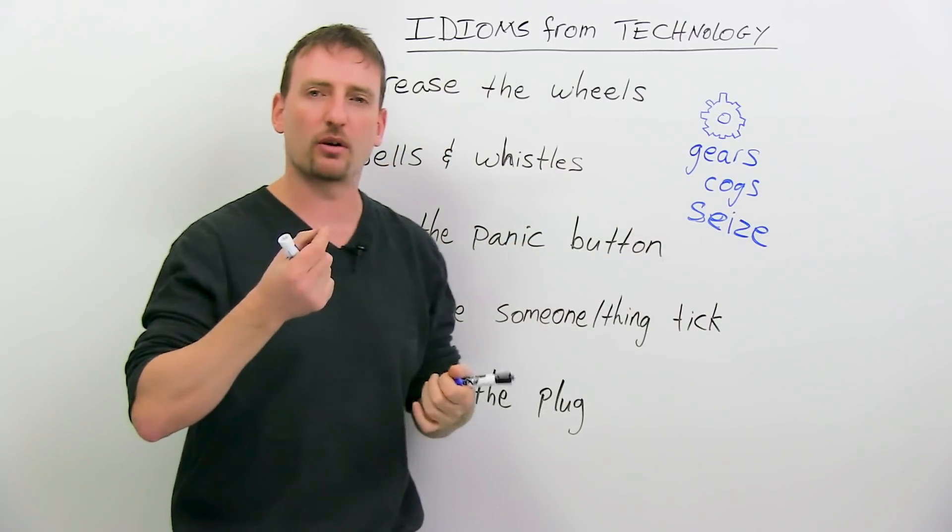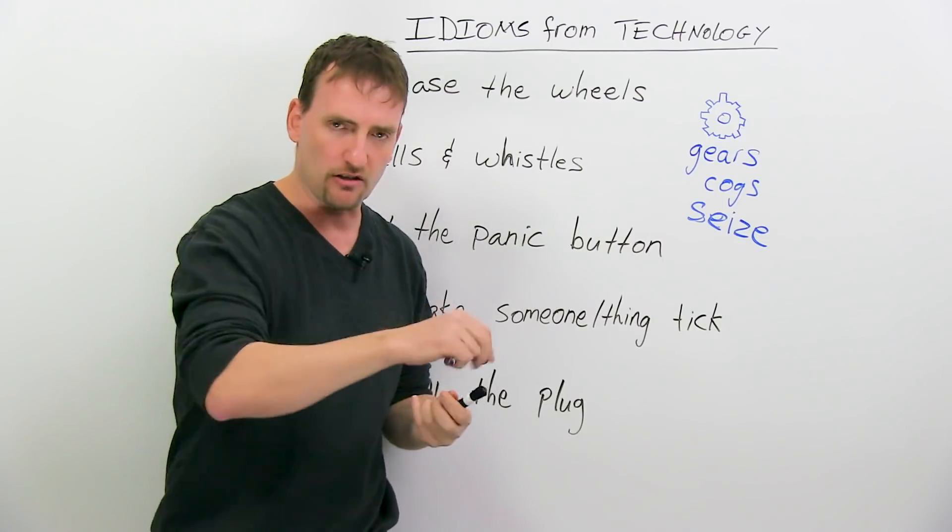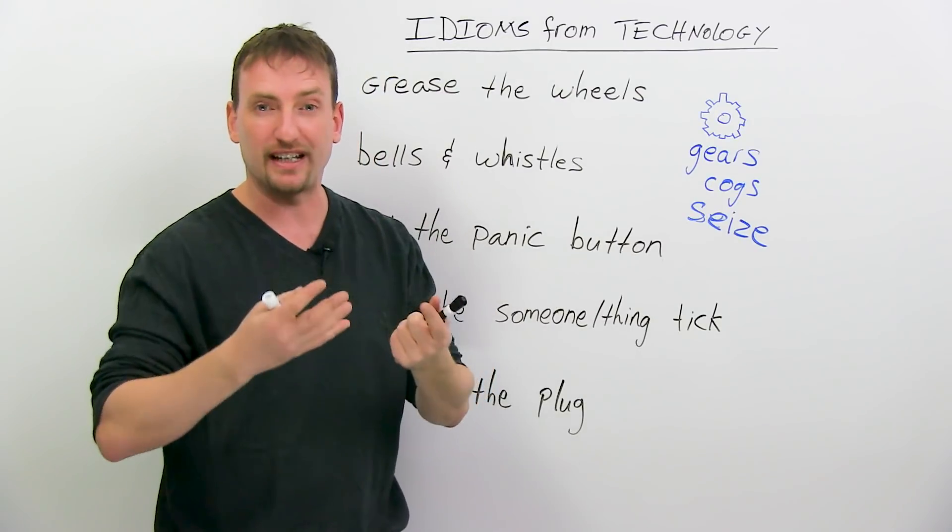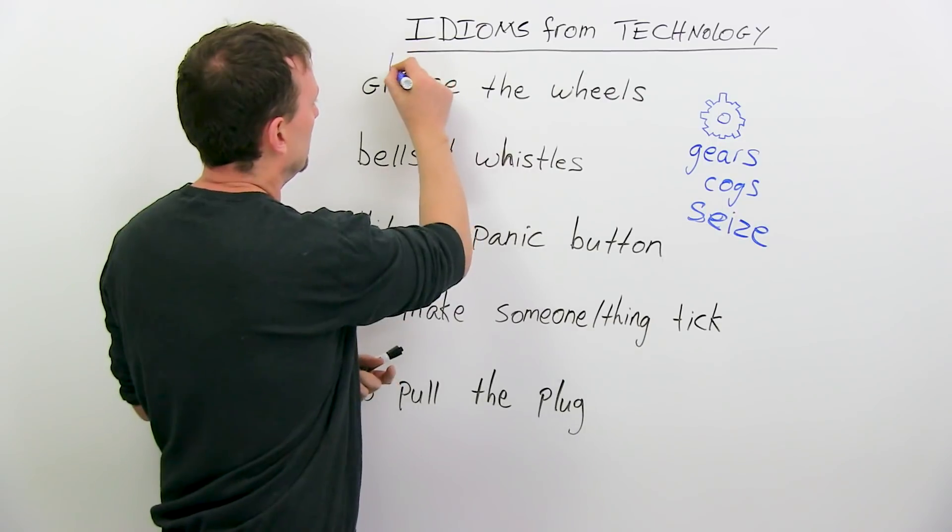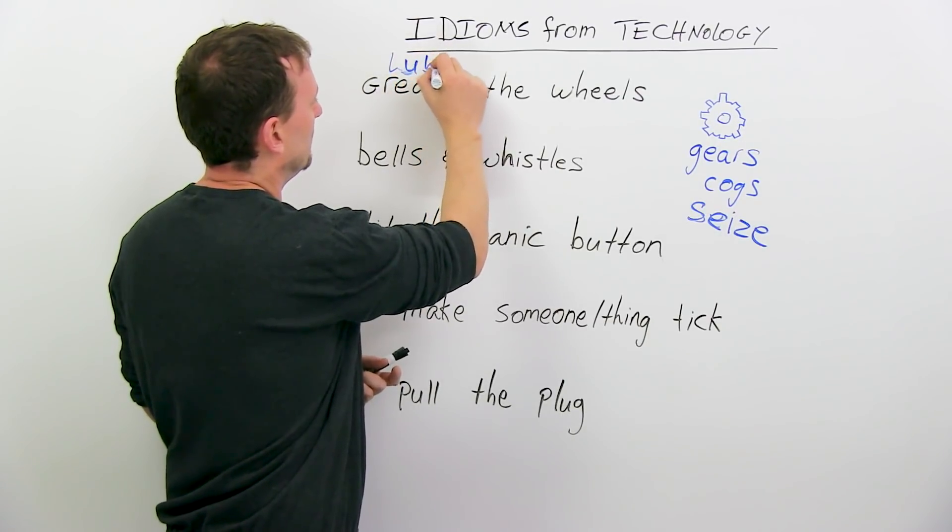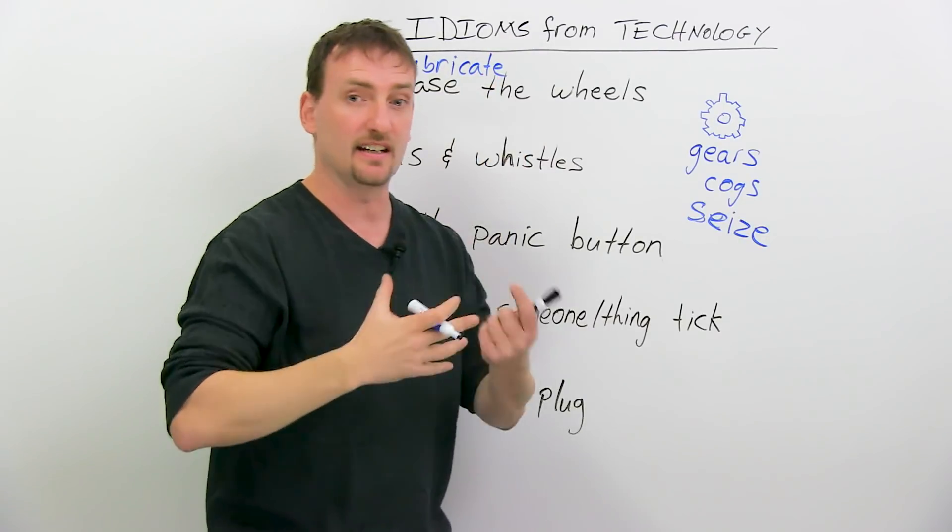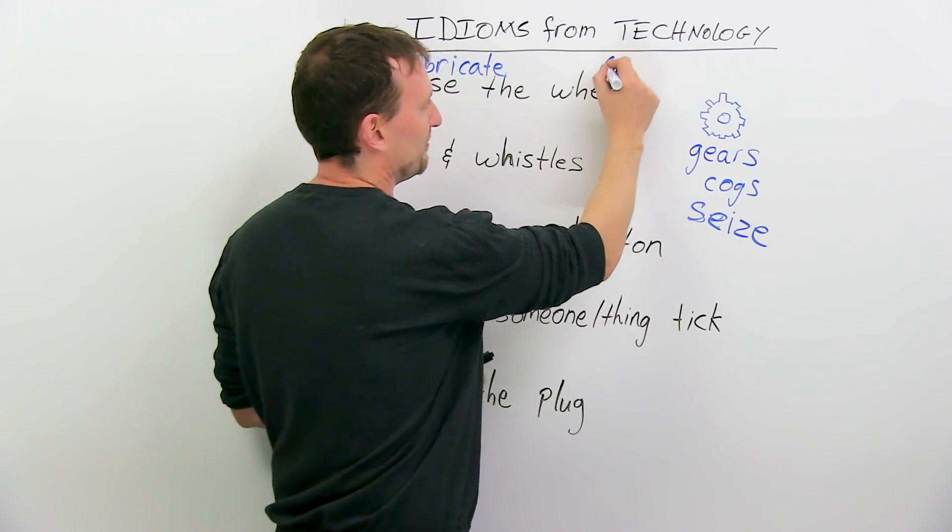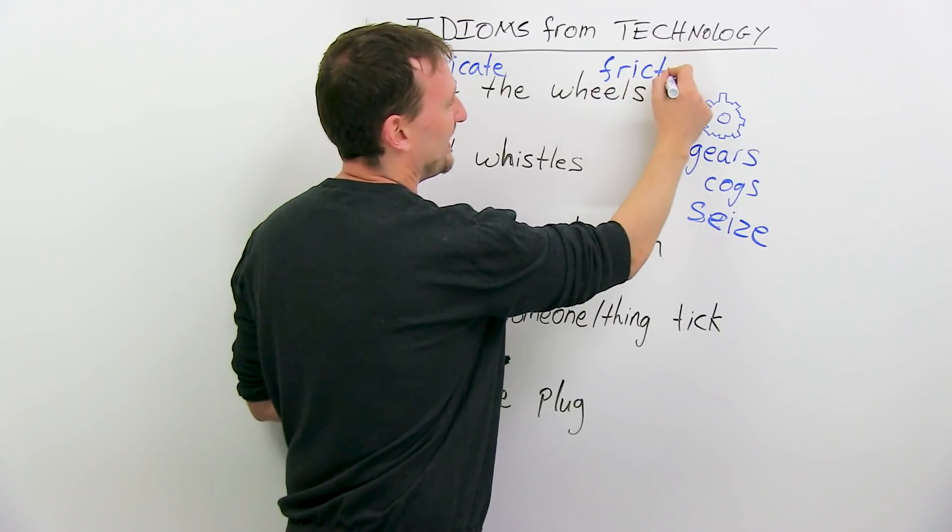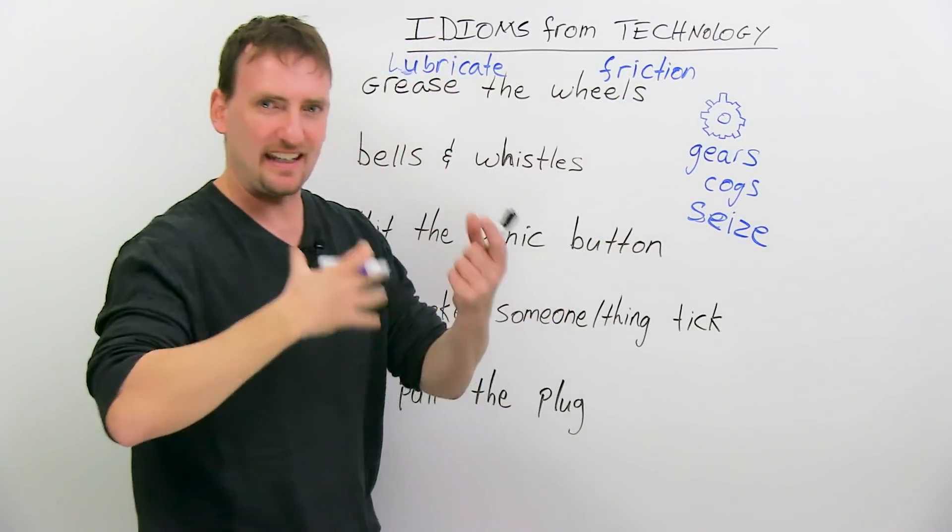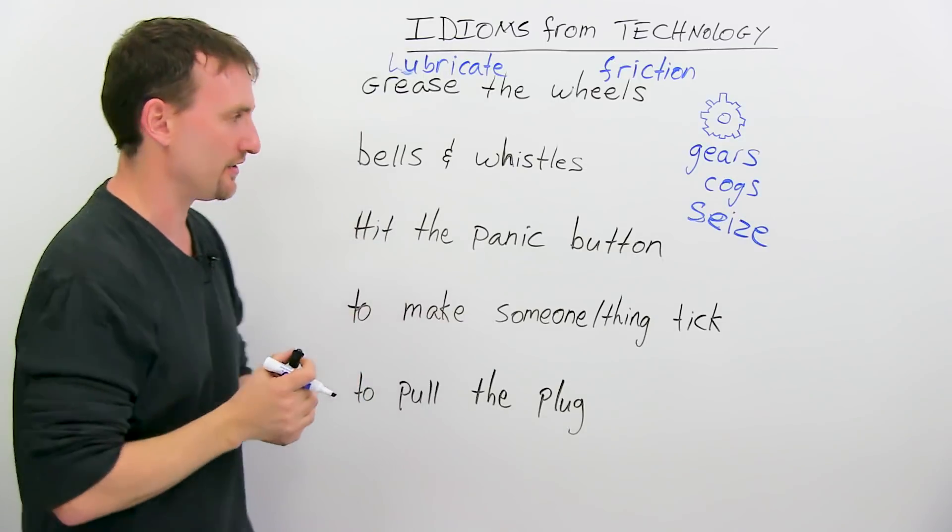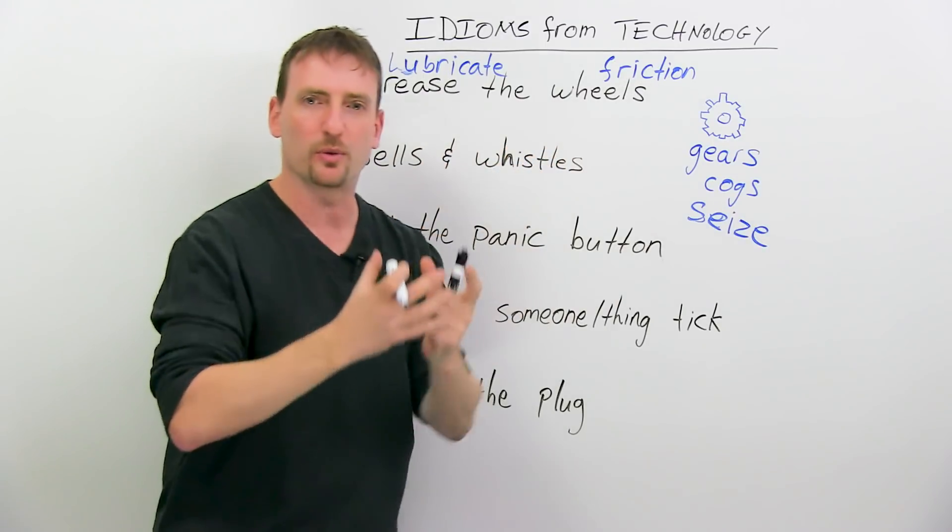Grease is like a thick oil. You put it all around, you make everything sort of lubricated. Lubricate means you make it so it doesn't heat up and it doesn't create friction. Friction is that heat that comes from touching each other too much. So grease the wheels so they don't touch.